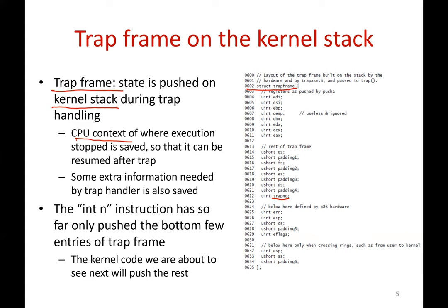By the time the kernel starts its trap handling, a few values are already populated onto the kernel stack by the INT instruction. After INT n runs, it has pushed a few things on the kernel stack and the EIP is pointing to kernel code. What we are going to see next is the kernel code that runs to handle a trap.